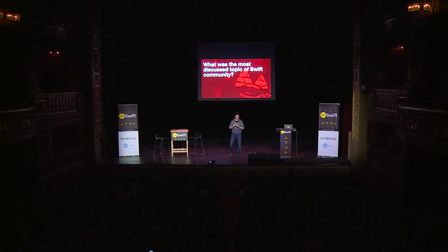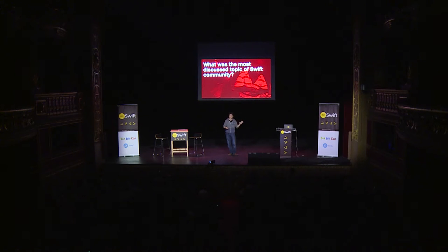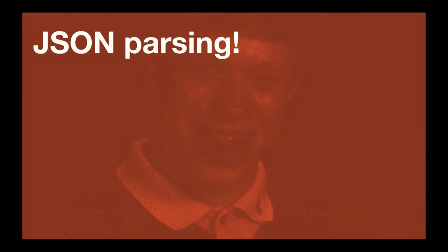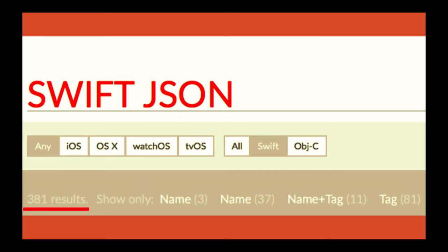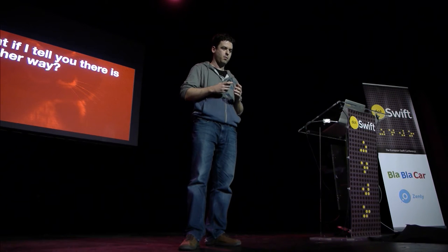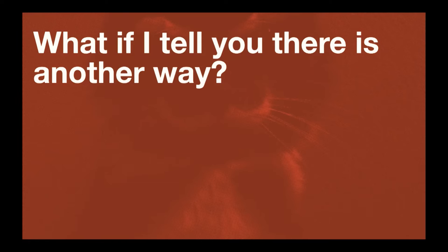I would like to start with a question: what was the most discussed topic of the Swift community? Except optionals, right? It was JSON parsing, and there were battles on the blogs about what's the best way of parsing JSON all over the internet. And it's also reflected in lots of libraries — there are 381 projects actually dedicated to Swift and JSON.